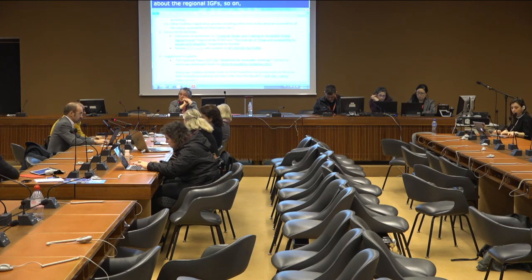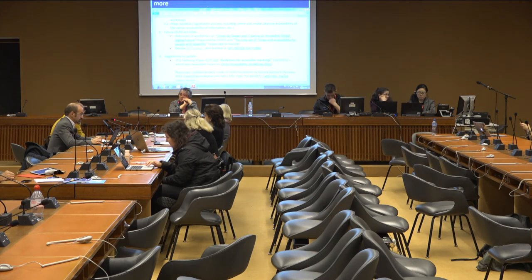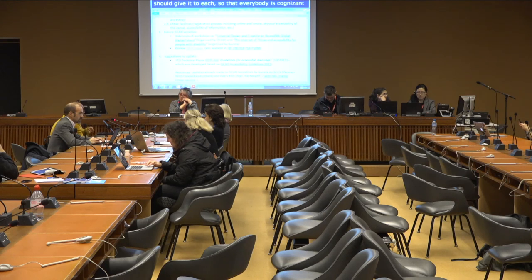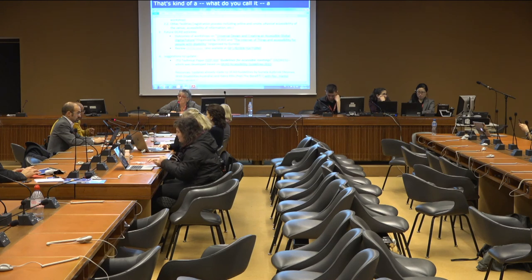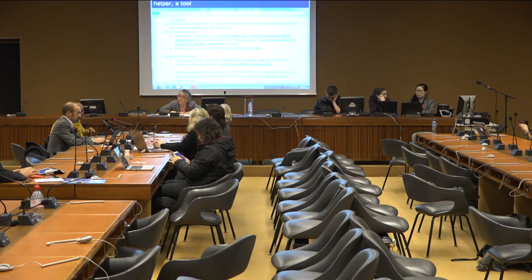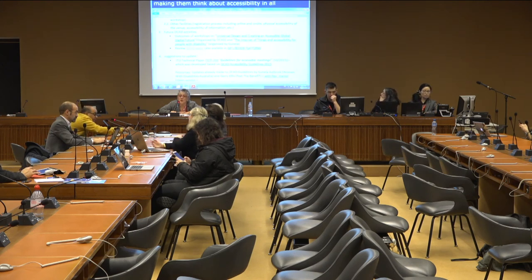Let's not scope-creep — let's stay with one goal first: how we can get accessibility as a content topic across the other dynamic coalitions. The participation guidelines are really important and we should give them to each coalition. If they don't have members with disabilities in their coalitions, they need to work on that. But the actual goal is making the content and output accessible — the guidelines are a tool to get there, but the real aim is making them think about accessibility in everything they're developing.